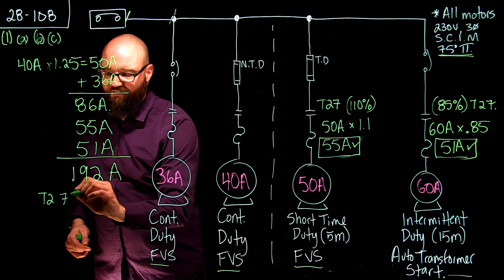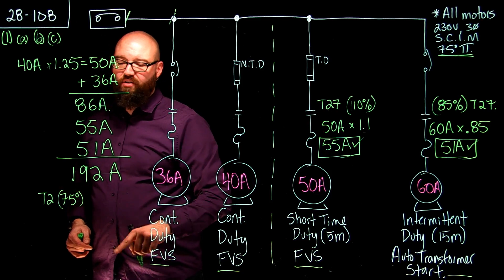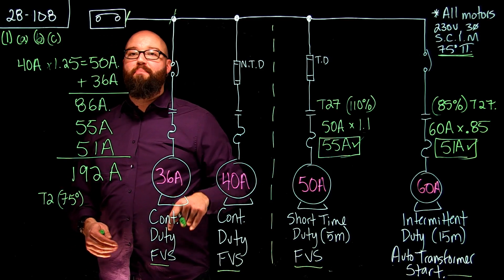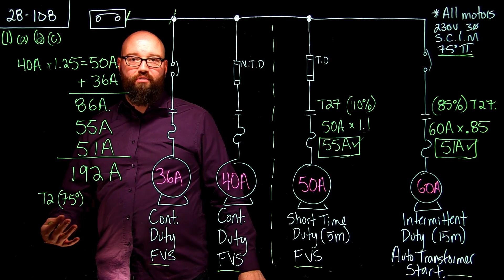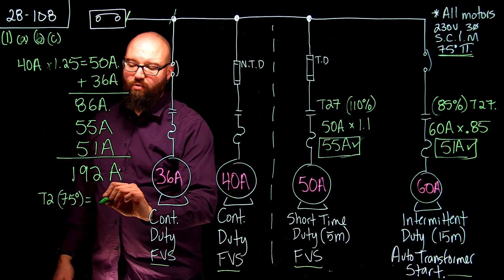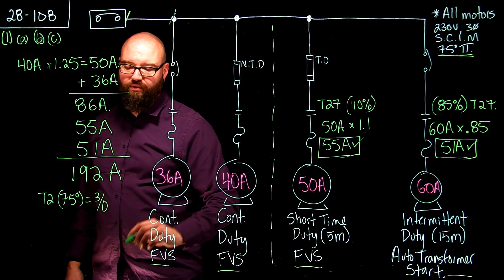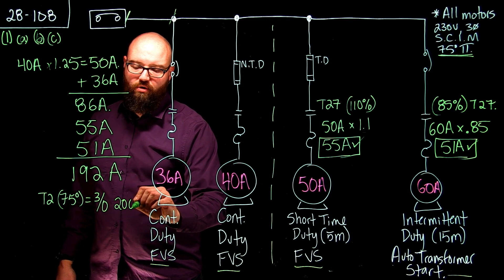So Table 2, 75 degree column with 192 amps minimum ampacity, meaning I cannot be smaller than this value. I'm going to go with a 3-aught that is good for 200 amps.